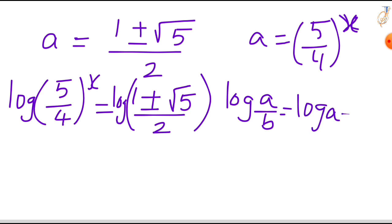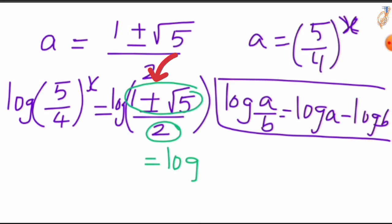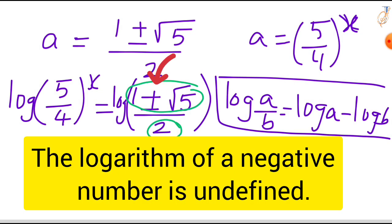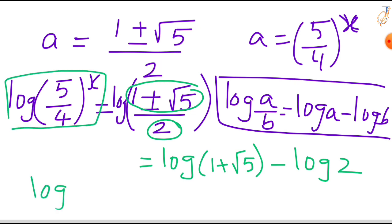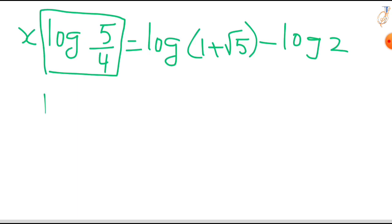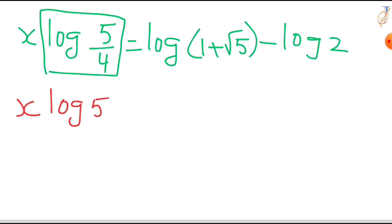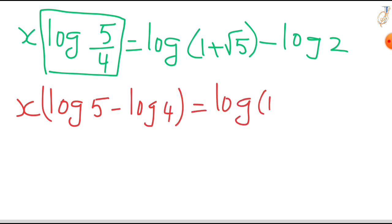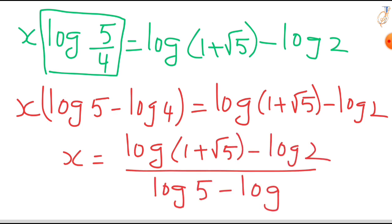The formula for log(a/b) is log a − log b. In logarithm we do not take negative values, so we use log(1+√5) − log 2. In the LHS, log[(5/4)^x] = x·log(5/4) = x·(log 5 − log 4). Therefore, x = (log(1+√5) − log 2) / (log 5 − log 4). This is the x value.